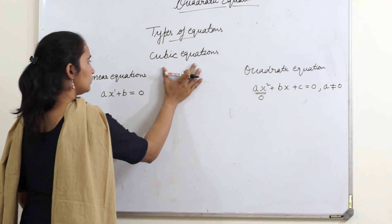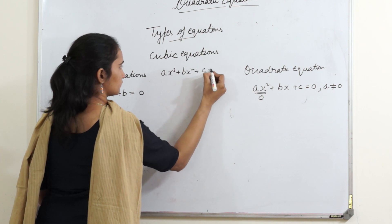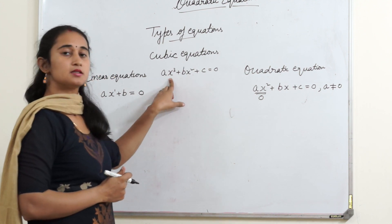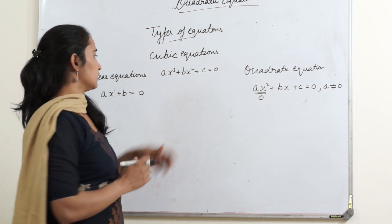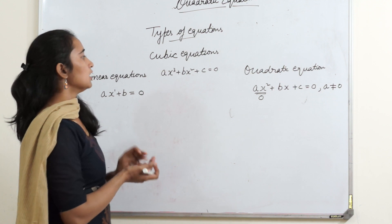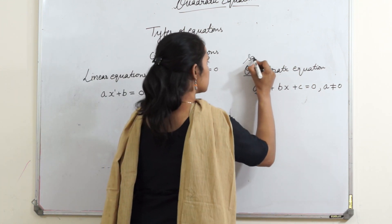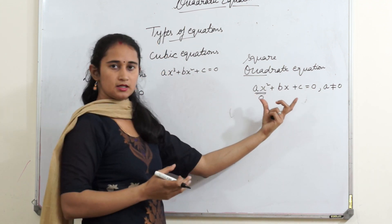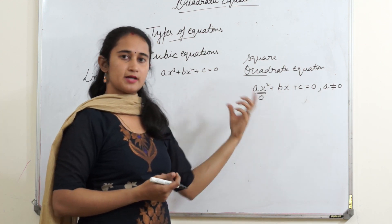Next is cubic equations. Cubic equations are those equations in which the highest degree of x is 3 — cubic means 3. So there are three types of equations: linear equations, quadratic equations, and cubic equations. A quadratic equation has an x squared term, and when that is the highest degree 2 in any equation, with the condition that a should not equal 0, it is a quadratic equation.